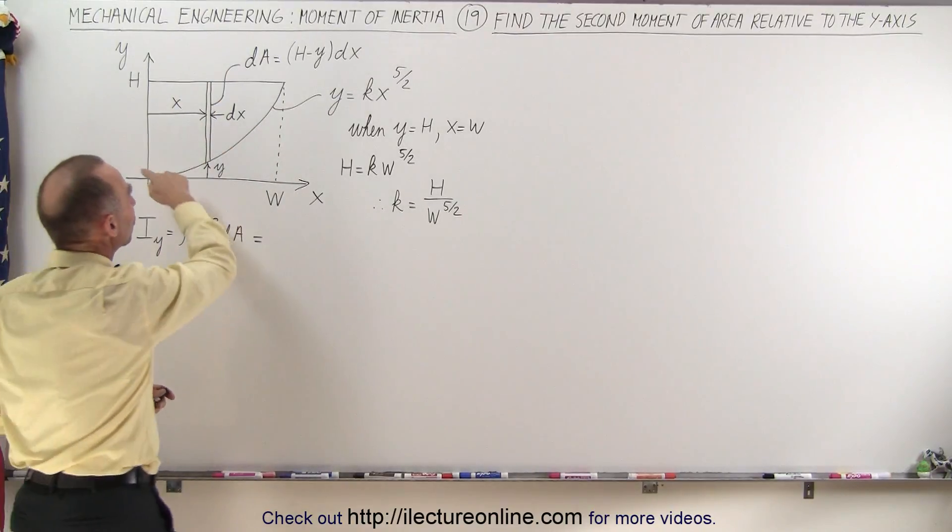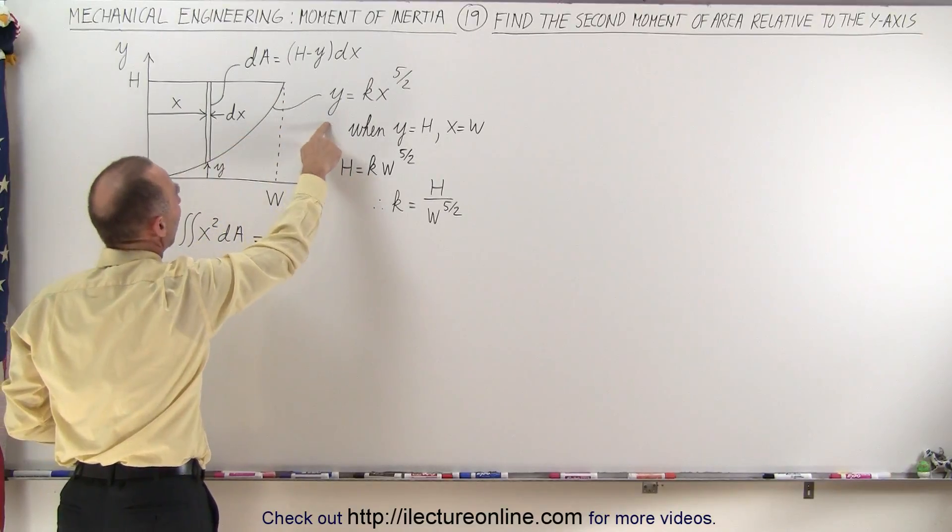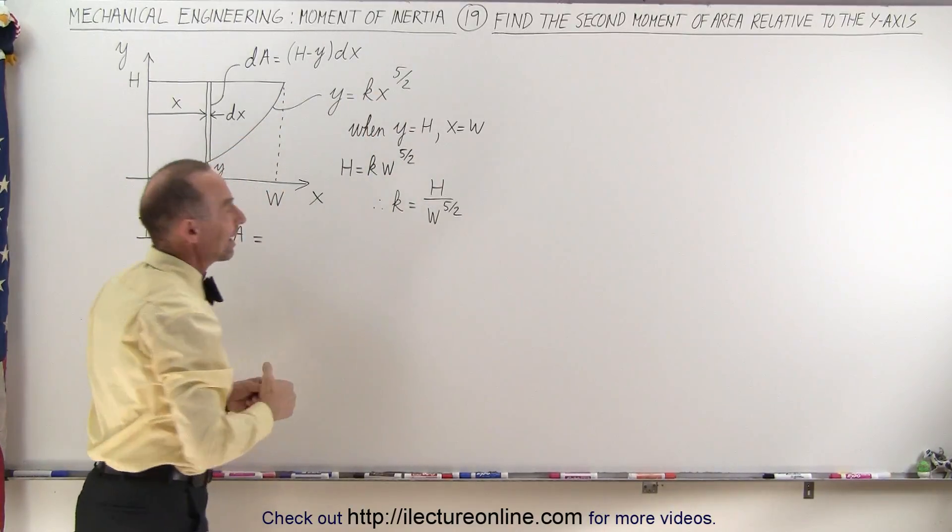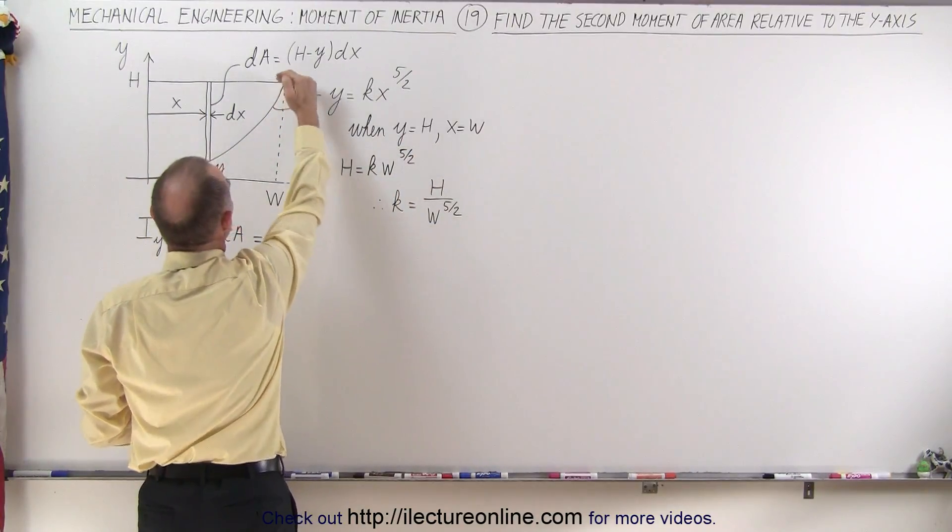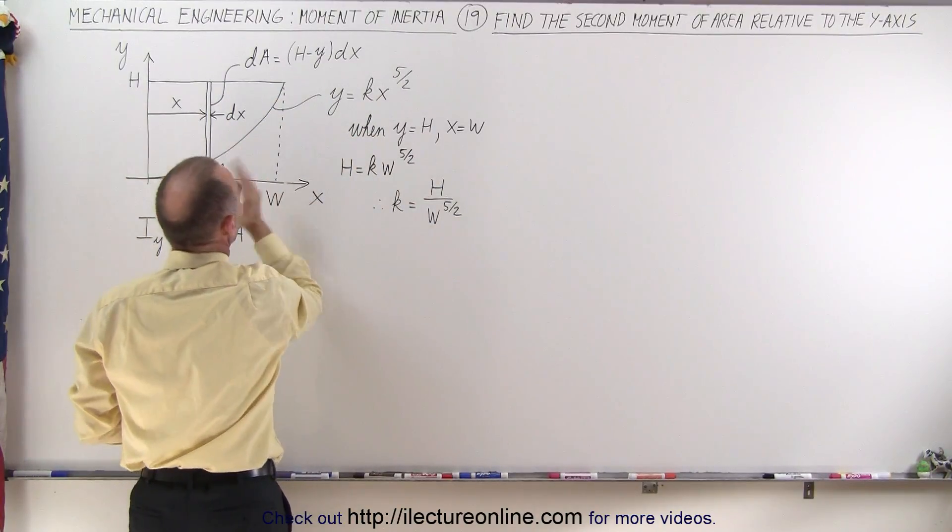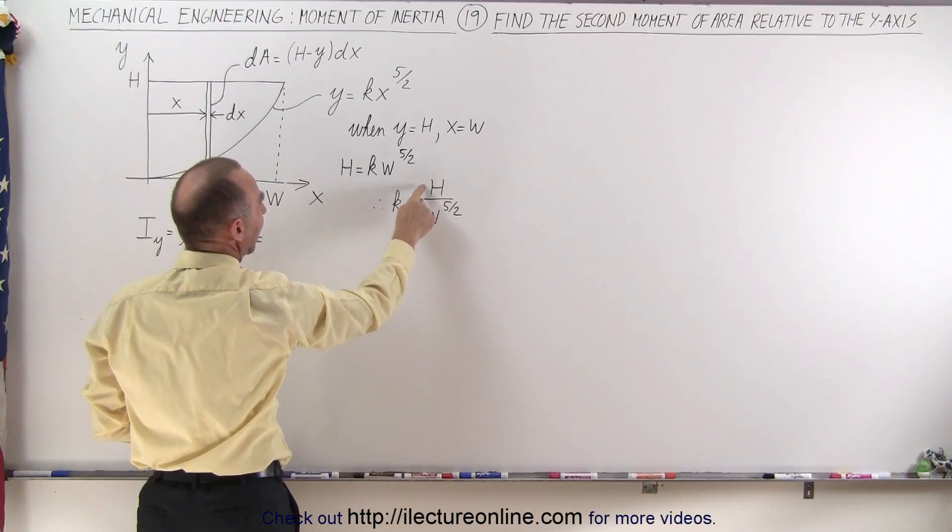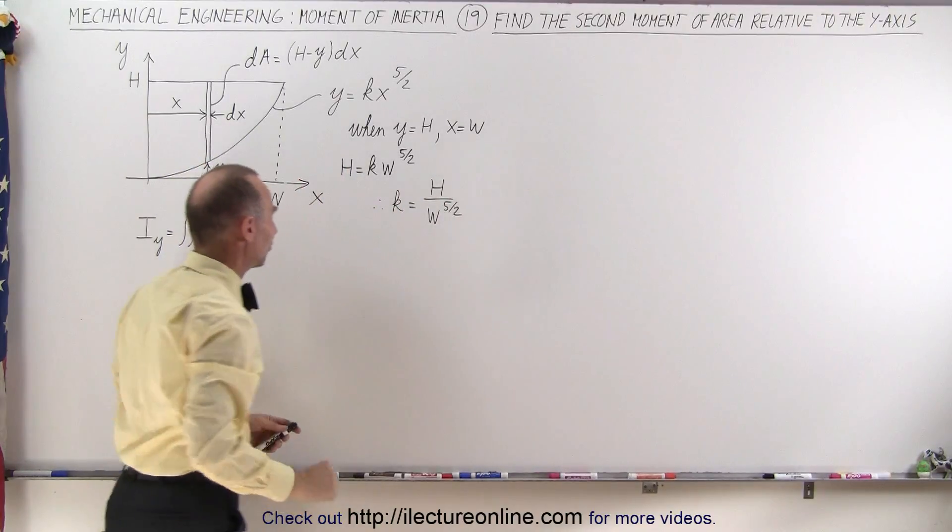Also, the equation of this line right here is y equals kx to the 5 halves, and k can be found by assuming that when y is equal to h, x has to be equal to w. So therefore we can solve for k, which is then h divided by w to the 5 halves power.